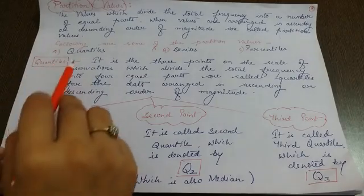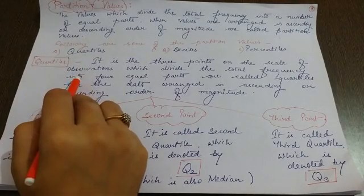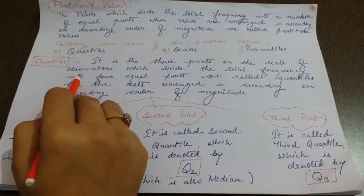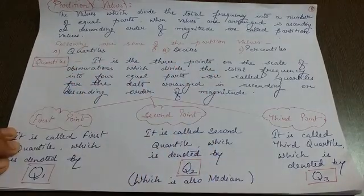What are quartiles? Quartiles is derived from the word quarter. Quarter means one-fourth. So if you have to arrange the partition value, the whole series will be arranged first, then you divide it into equal parts. Quartiles will divide a series of frequency into four equal parts after arranging it in ascending or descending order. So that gives you your quartiles.